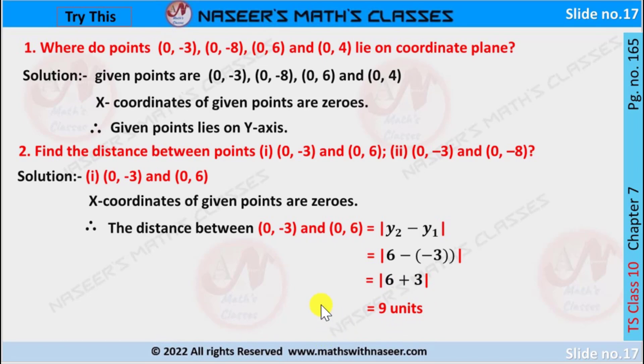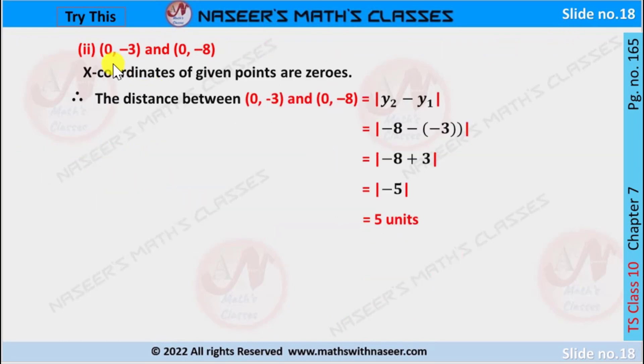Then we get 6 plus 3. 6 plus 3 is 9. |9| equals 9 units. It is the distance between the given points (0, -3) and (0, 6).